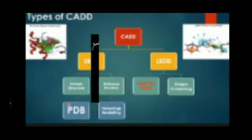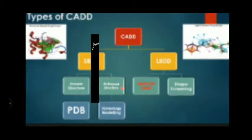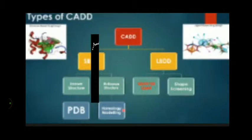For a known structure, you can download it from PDB, process it, repair it, and carry on your CADD steps. When the structure is unknown or not well-known — for example, maybe for some bacterial target — you may have related structures. You use a related structure as a template, build your protein on it, and that is called homology modeling. So in SBDD, there are two channels: known structure and homology modeling.